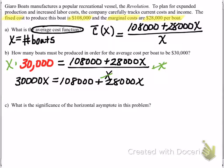And this will give us $30,000x is equal to $108,000 plus $28,000x. And then we'll go ahead and subtract the $28,000. So $30,000x minus $28,000x will give us $2,000x is equal to $108,000. And then we'll divide by $2,000.